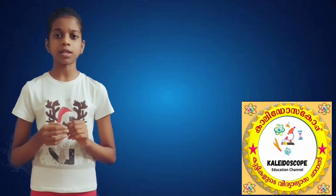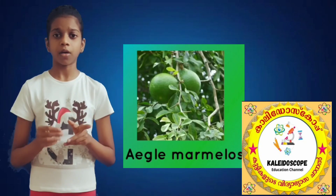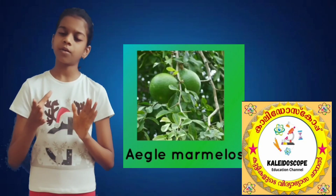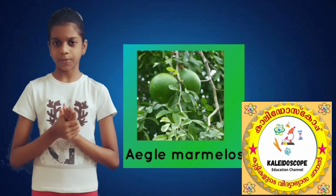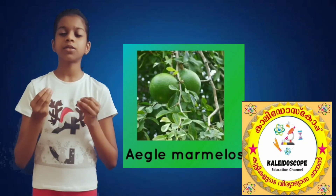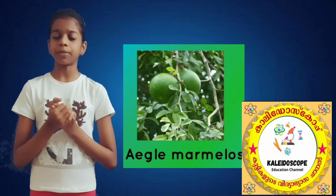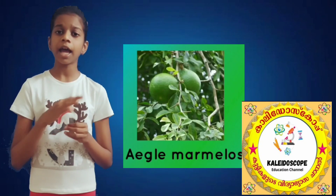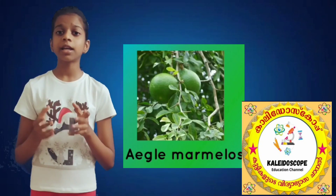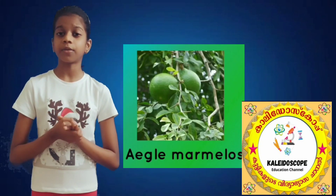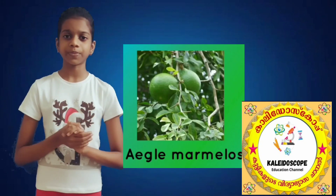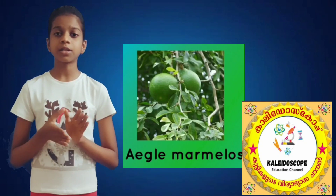Uses of Covalum: The decoction made from the leaves of Covalum is good for peptic ulcer. It is used for the treatment of diabetes, purifies blood, and cools the body. It can be used for relief from infection and jaundice, and the leaves are used for lowering blood pressure.